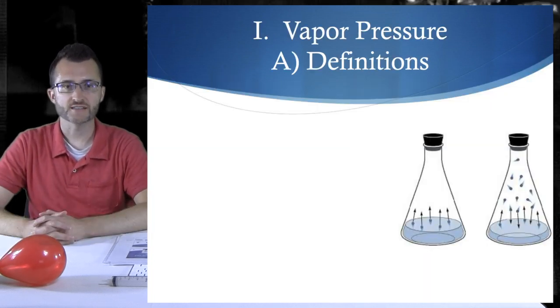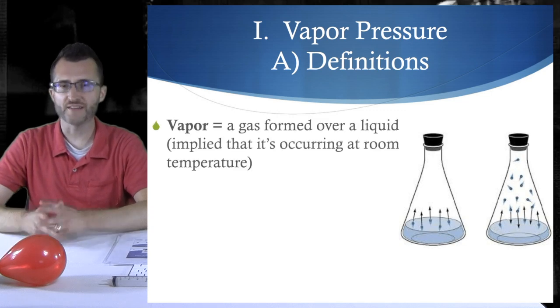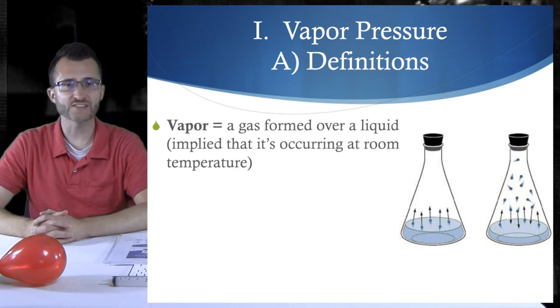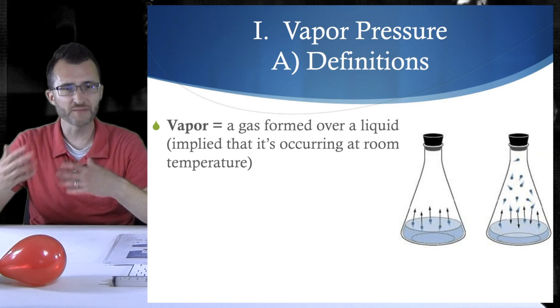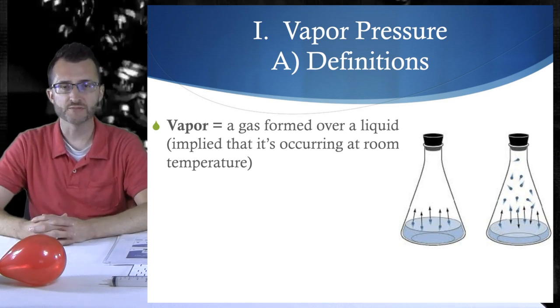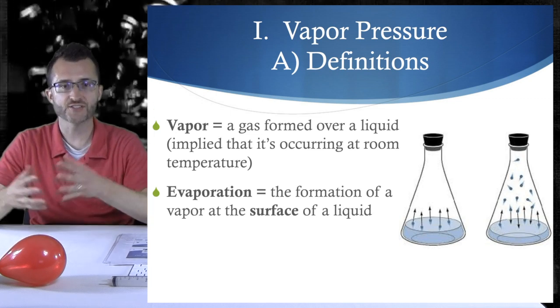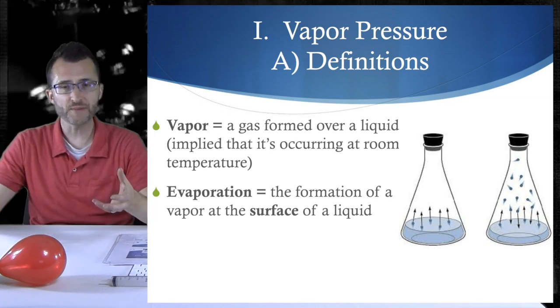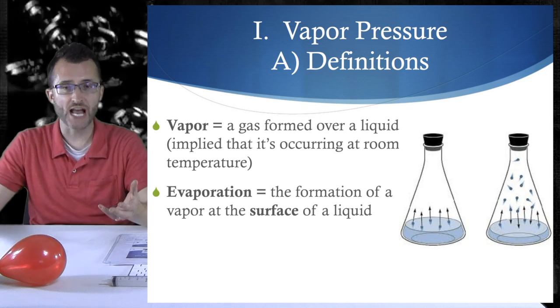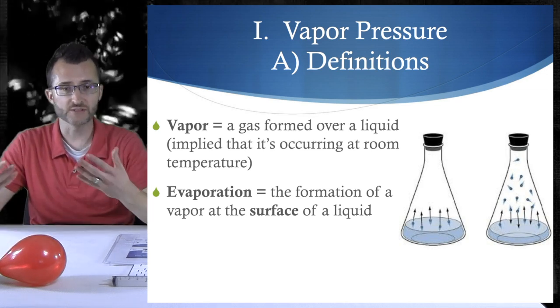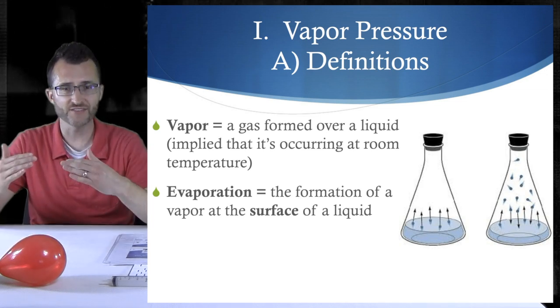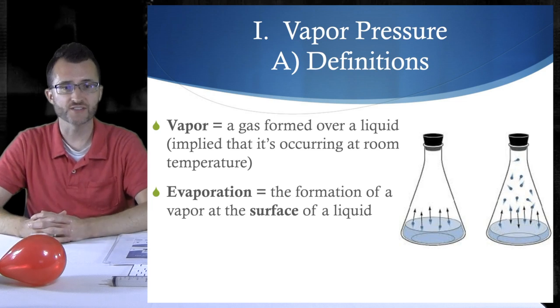Vapor pressure. Definitions. Let's start with a vapor. A vapor isn't just a gas. It's a gas formed over a liquid. And there's some implication that it's occurring at room temperature. Evaporation is the formation of a vapor at the surface of a liquid. So vaporization is just the general catch-all term for liquid to gas. But evaporation is specific to it occurring at the surface of the liquid.